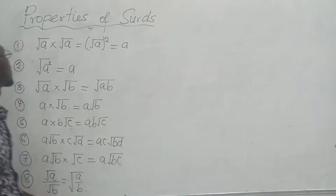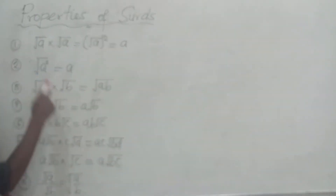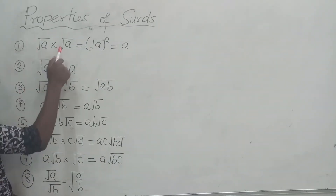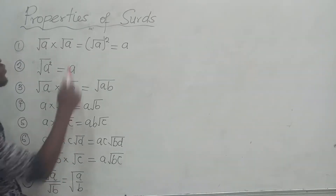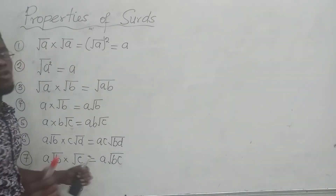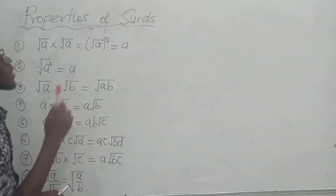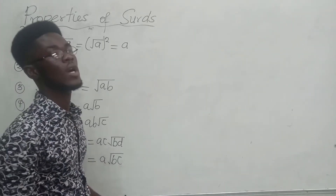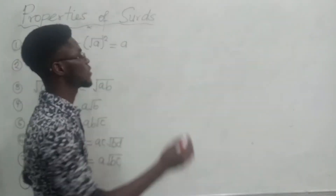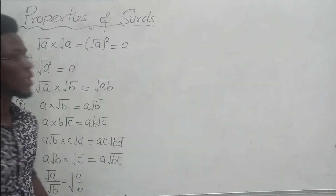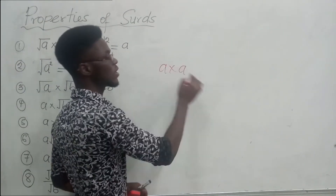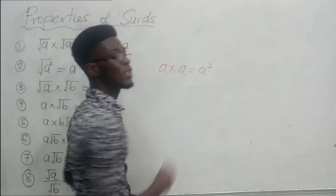The first one says: if you have the square root of a times the square root of a, it is equal to the square root of a squared, and that simplifies to a. At the basic level, we have been doing this over and over again. A times a gives us a squared.